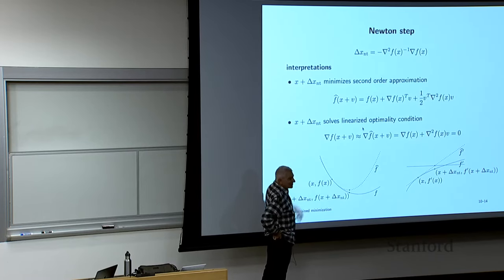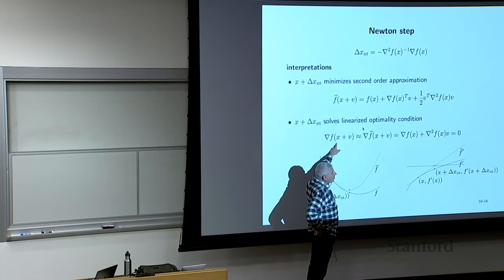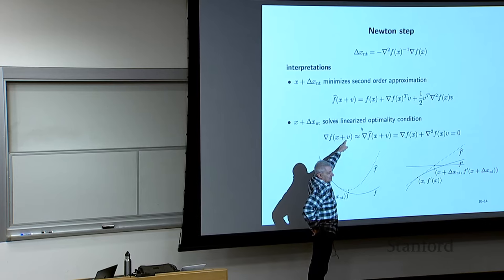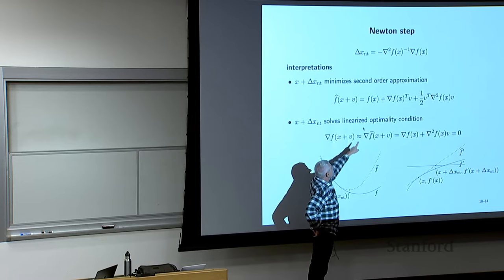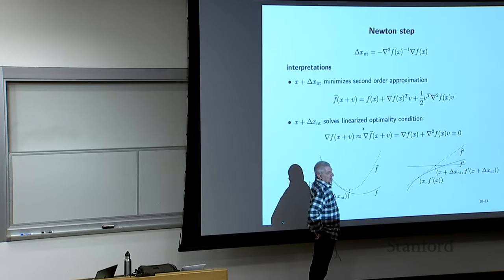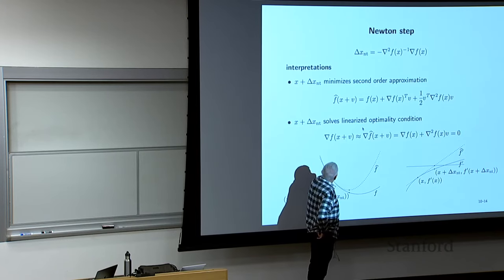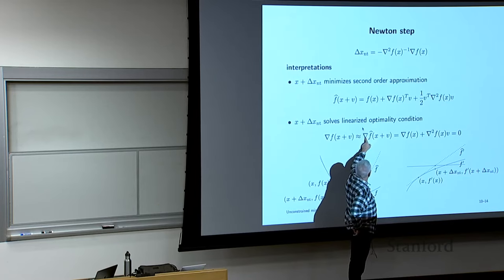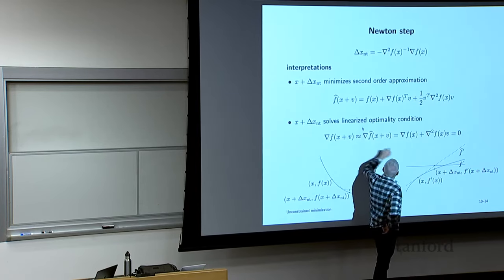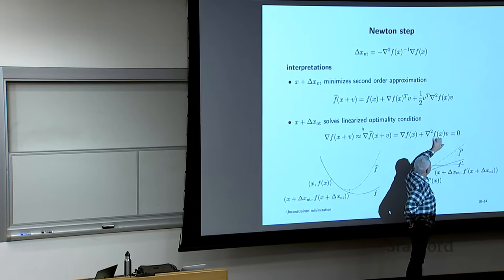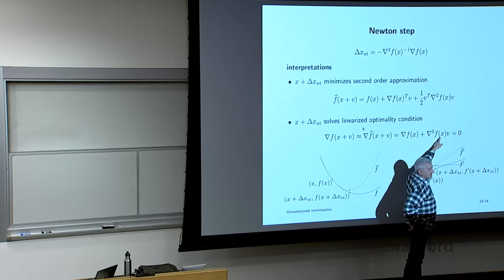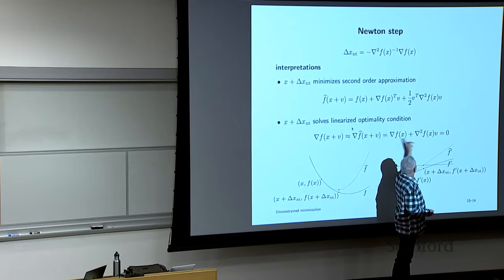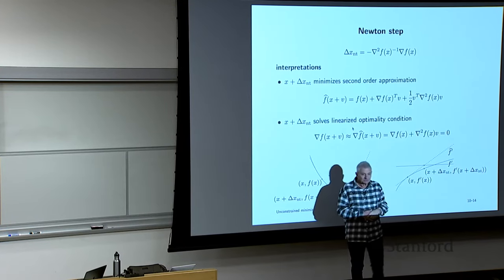Another interpretation: linearize the optimality condition. I'm at point X and want a point where the gradient of F is zero. I'll perturb X by V. I'd like the gradient of F at X plus V to equal zero. I approximate this using calculus: the first-order expansion of the gradient is the gradient plus the Hessian times the displacement. I set that to zero and solve — and that gives the Newton step again.